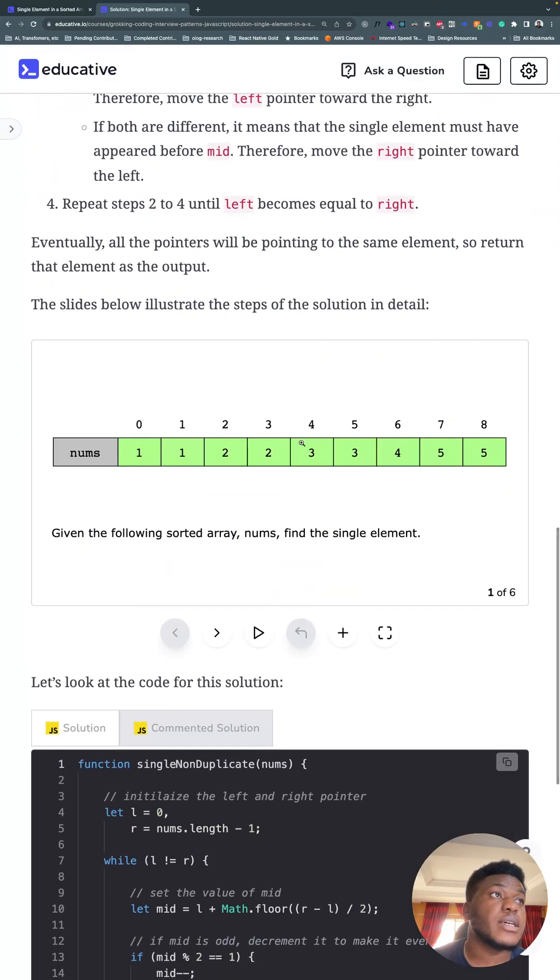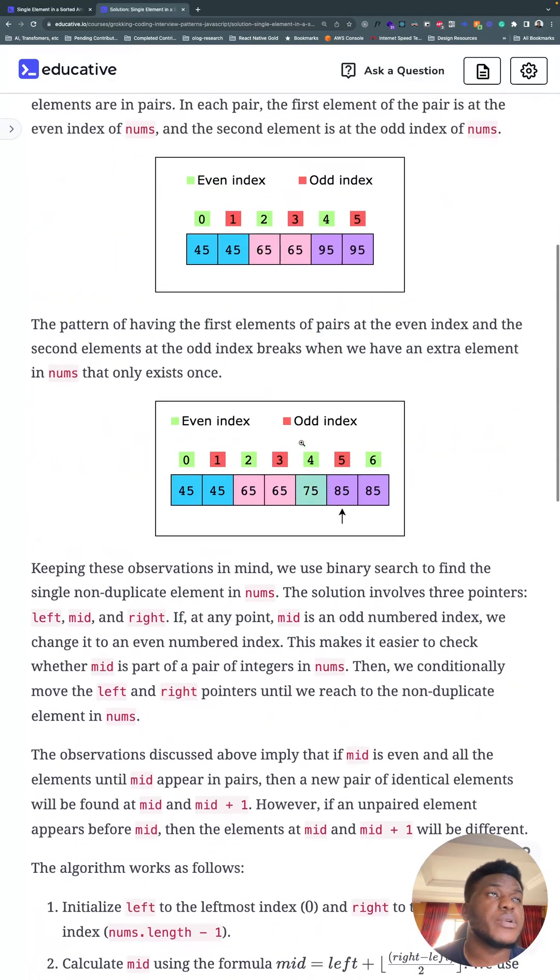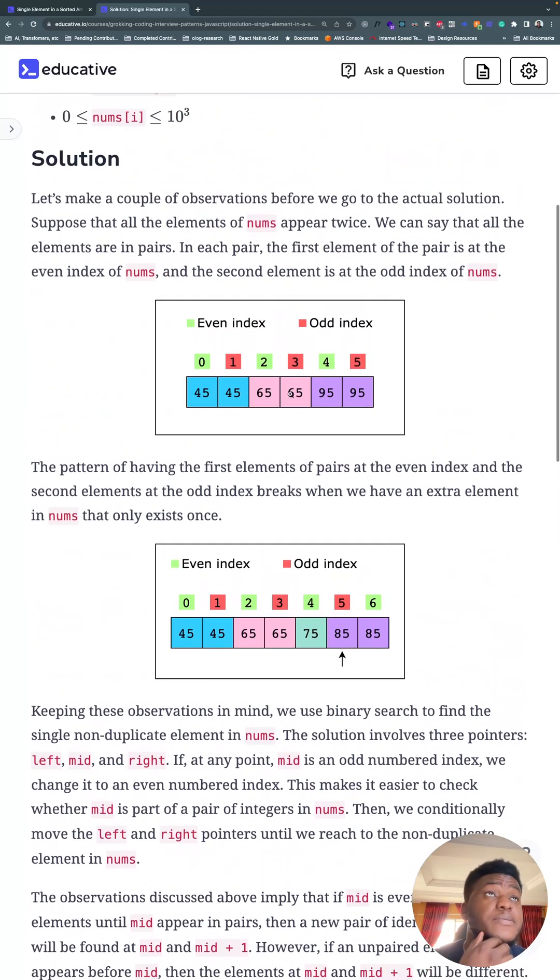This is a lot of text but the solution relies on an insight. Let's make a couple of observations before we go to the actual solution. Suppose that all elements are in pairs. In each pair, the first element of the pair is at the even index and the second is at an odd index. So if everything is duplicated normally with no single element that doesn't have a corresponding pair,